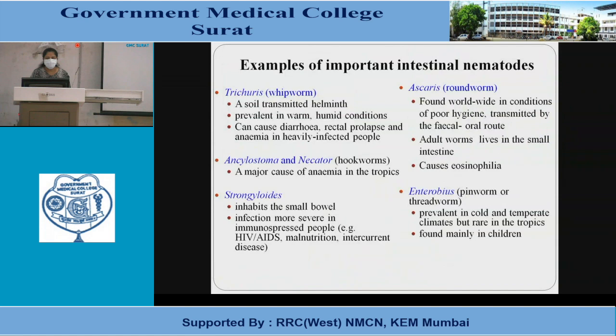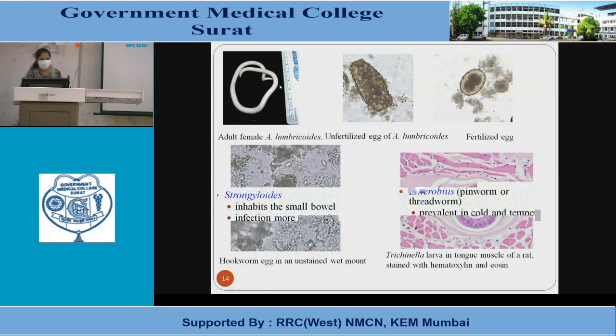Examples of important intestinal nematodes: Trichuris, which is the whipworm; Ascaris, the roundworm; Ankylostoma and Necator, the hookworms; Strongyloides, which inhabits the small bowel; and Enterobius, the pinworm or threadworm. Figures show: adult female of Ascaris lumbricoides, unfertilized egg, fertilized egg, hookworm egg in unstained wet mount, and Trichinella larva in tongue muscle of a rat in its spiral form.